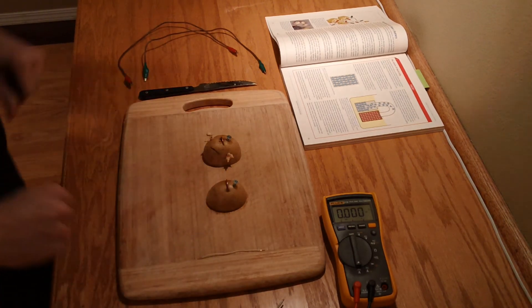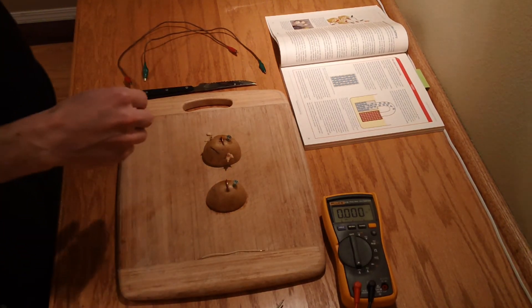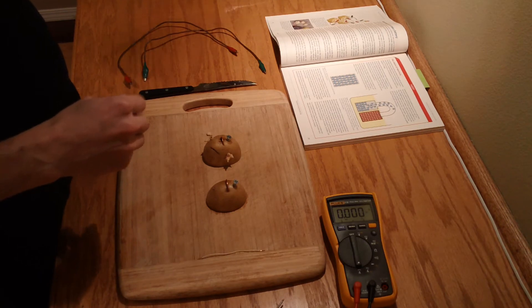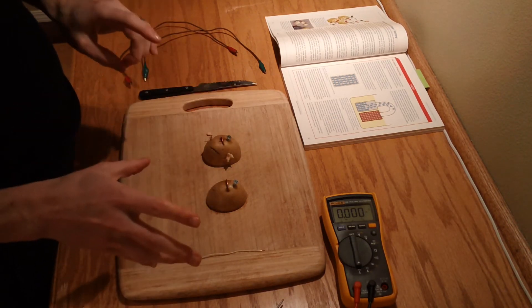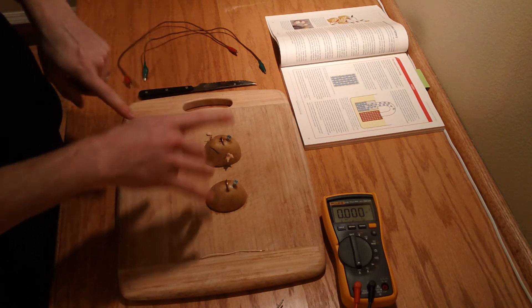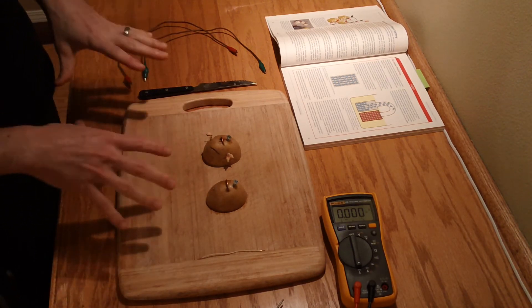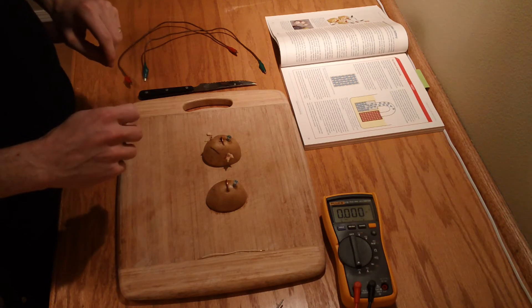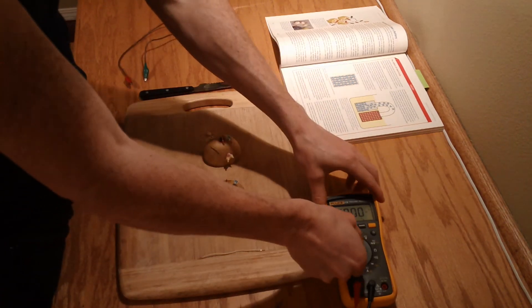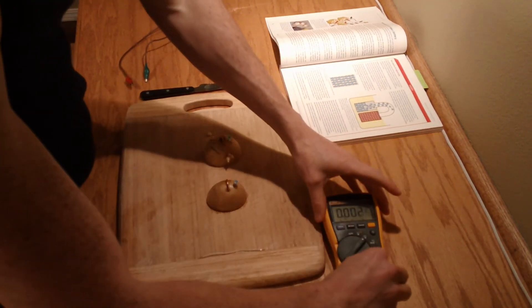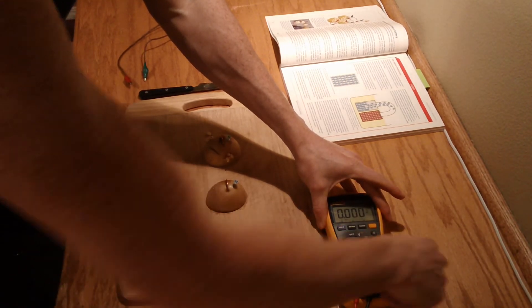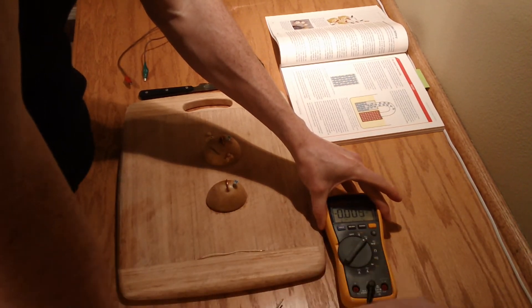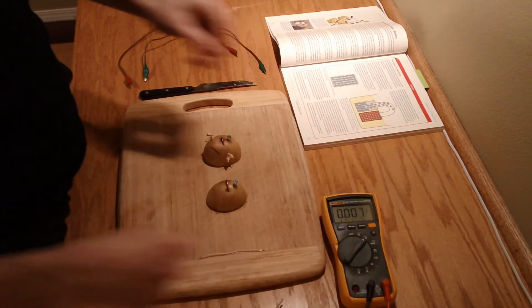But when we put these guys up in series, we should at least be able to see double the voltage. We won't see a difference in current, though, because in a series circuit, the current would be constant. So let's put this guy just so we don't forget. Put him back in direct current voltage. Put that guy in direct current voltage. Okay. So let's hook these guys up.